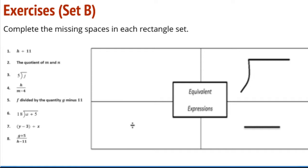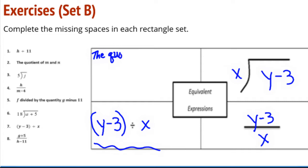Take a look here at set B. Number 7 is a nice one here. We've got Y minus 3 divided by X. Now, in this horizontal form, I've got to go back and say, what about order of operations? I don't want to do the 3 divided by X first. I want to do the Y minus 3 and then divide by X.